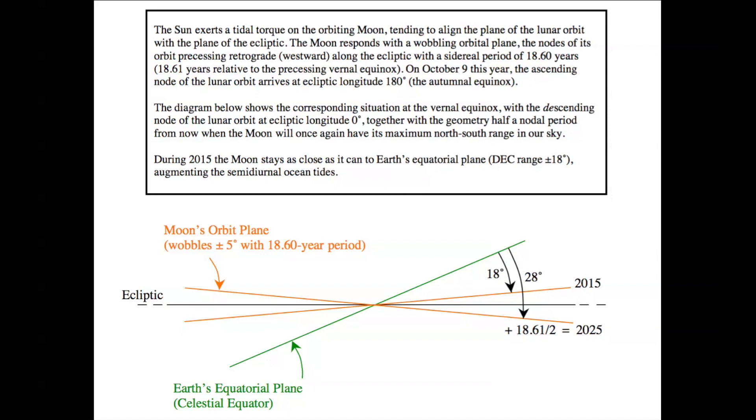The moon responds to that torque from the sun with a wobbling orbital plane. The nodes of the orbit precessing retrograde or westward along the ecliptic, with a sidereal period of 18.60 years, or 18.61 years relative to the precessing vernal equinox. On October the 9th this year, the ascending node of the lunar orbit arrives at ecliptic longitude 180 degrees, which is the autumnal equinox. And the diagram shows the corresponding situation at the vernal equinox, with the descending node of the lunar orbit at ecliptic longitude zero. And look at this yellow line here for this year, 2015.